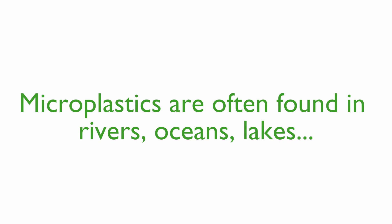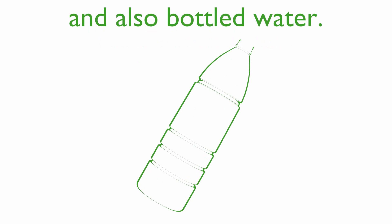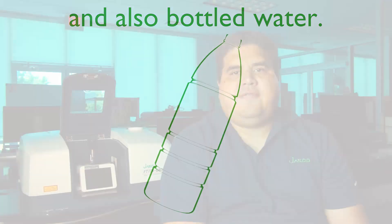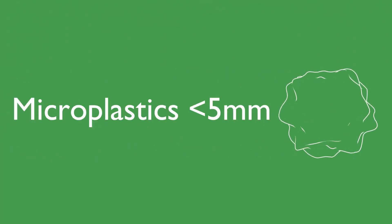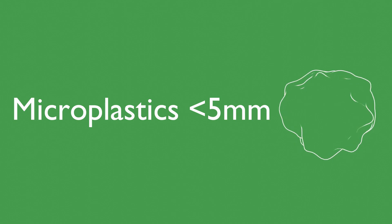Microplastics are a concern because they are present in different bodies of water, like fresh and seawater, and can even be found in bottled water. Microplastics are defined as any polymeric particle that is below 5 mm.